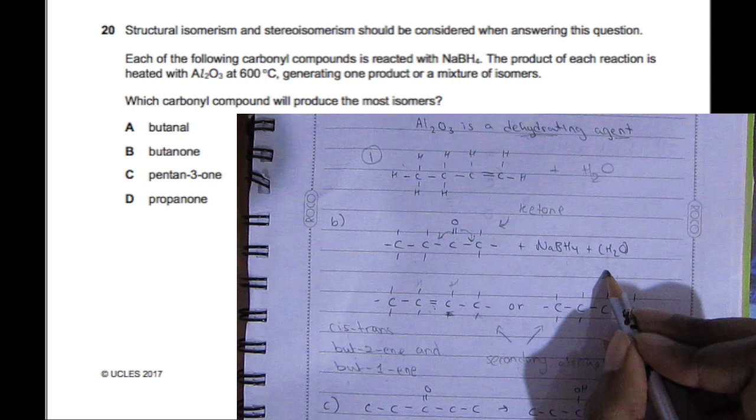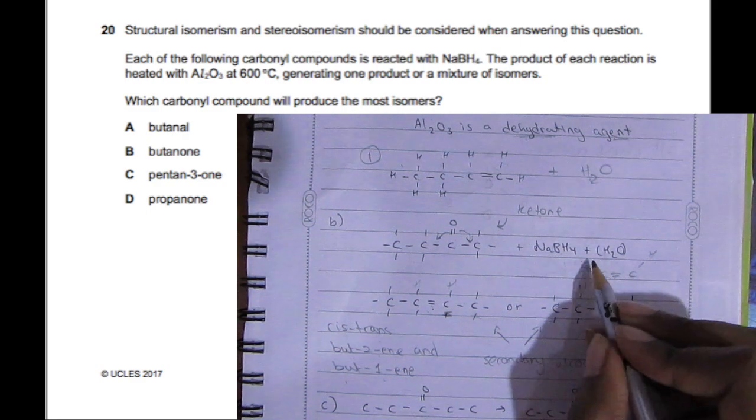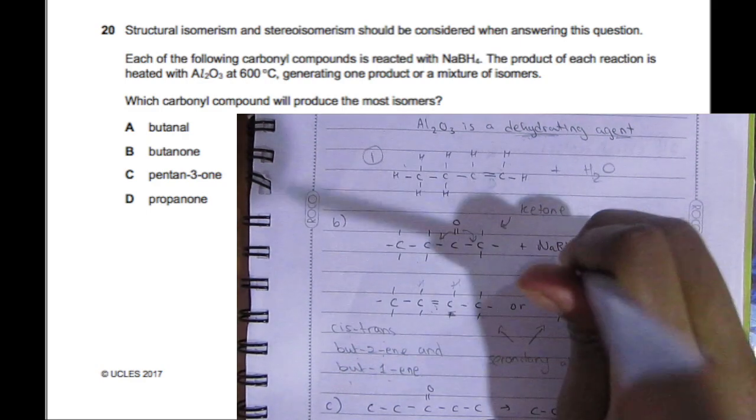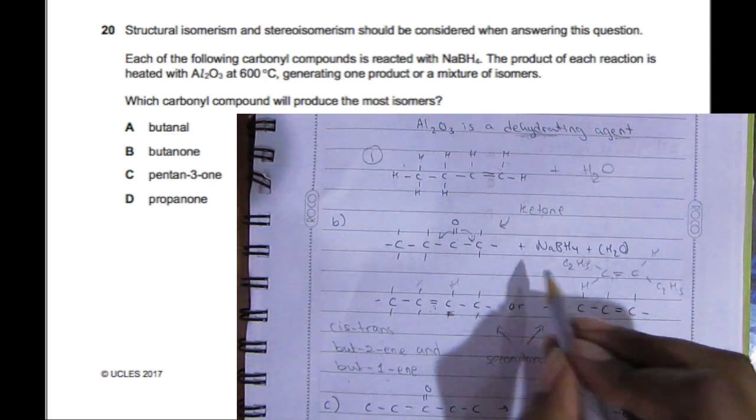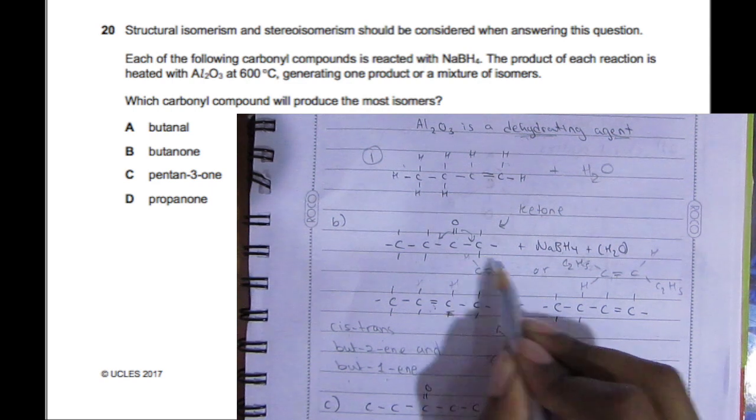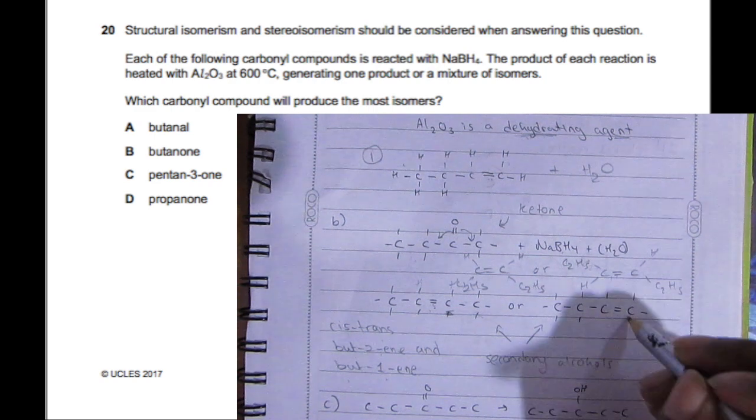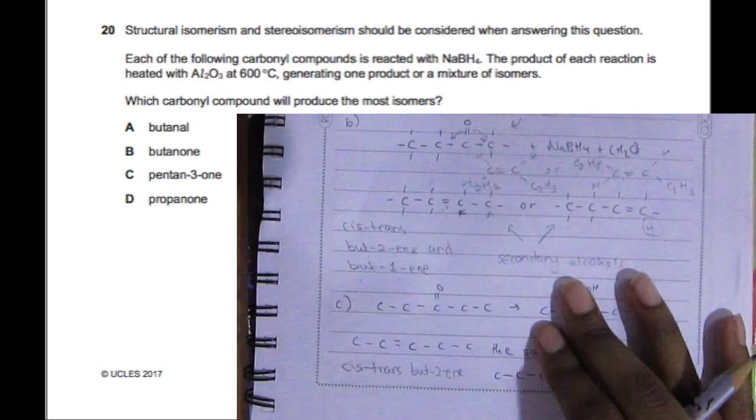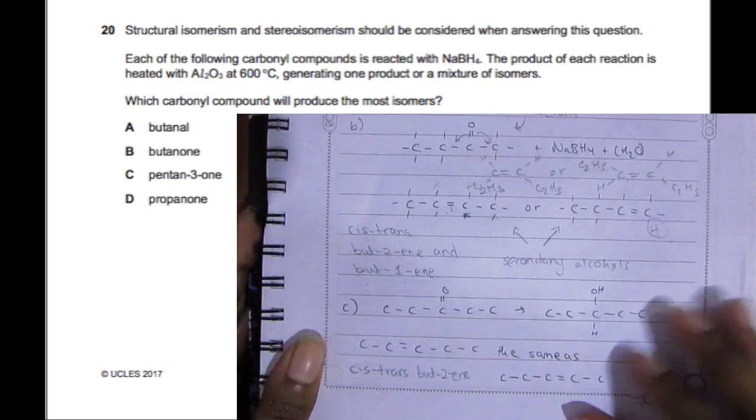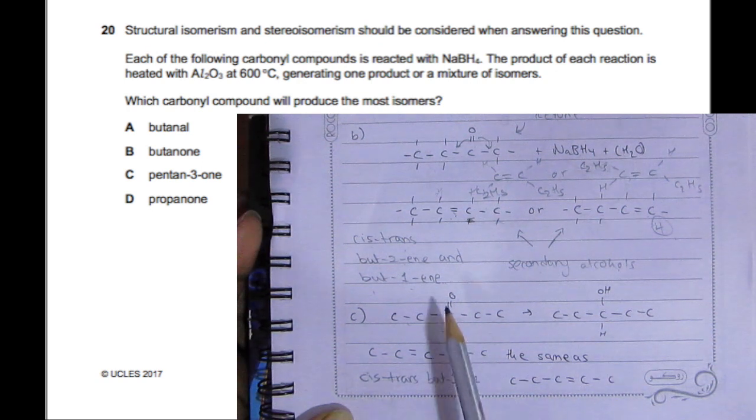You have cis-but-2-ene, trans-but-2-ene, cis-but-1-ene, and trans-but-1-ene. I'll draw a random example: you have the carbons, and on both of them on the top side you have C2H5 and hydrogen, but at the bottom you have C2H5—they're switching. That's trans. Cis is when two of the same elements are on the top and two of the same elements at the bottom. If you draw out both, you'll end up with four different isomers.